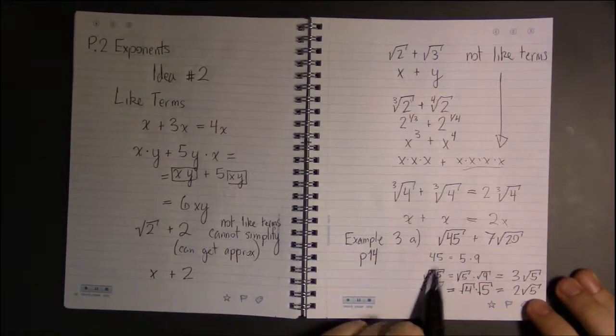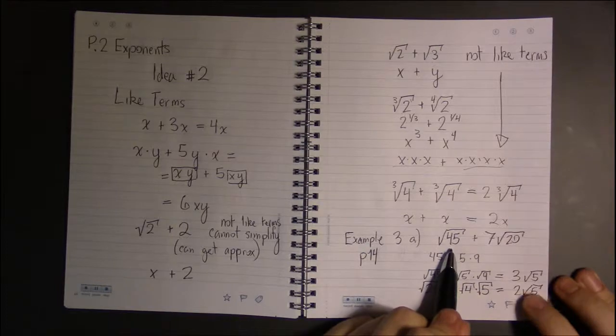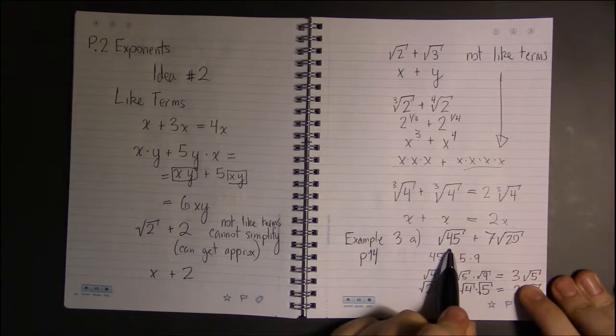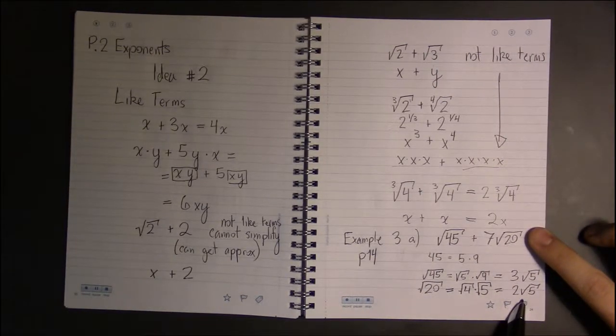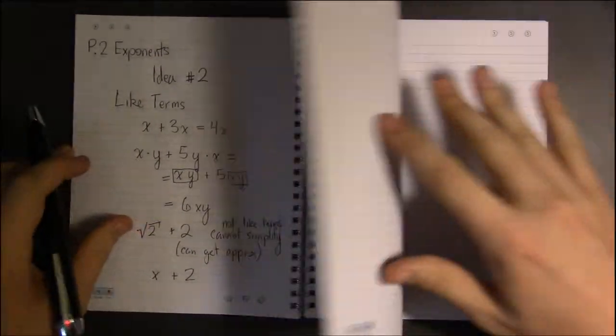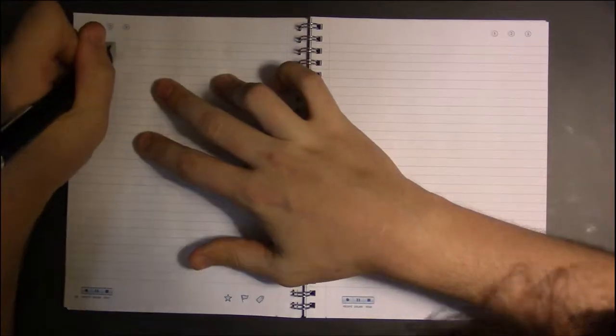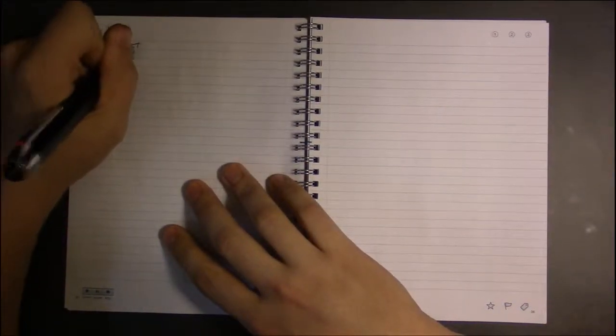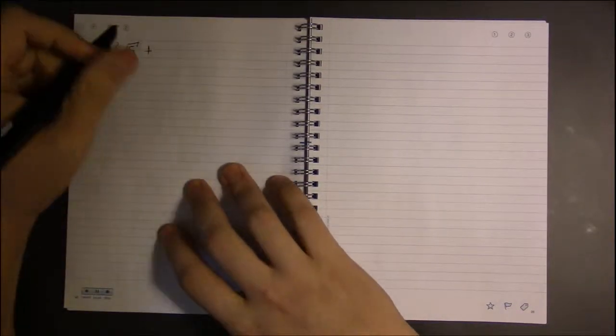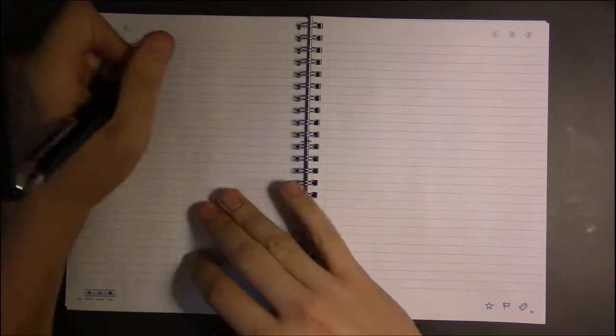So instead of square root of 45, we're going to write 3 times the square root of 5, and instead of square root of 20, we're going to write 2 times the square root of 5. So we have 3 times the square root of 5 plus